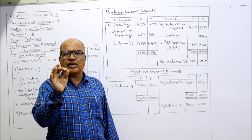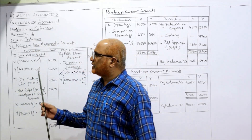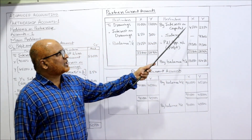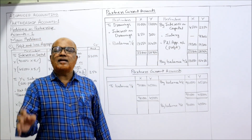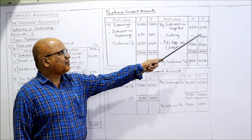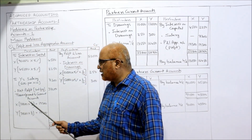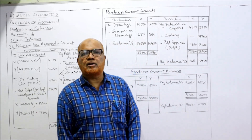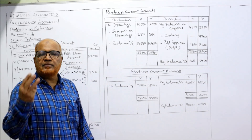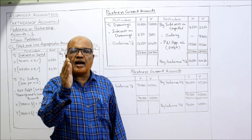These three items always appear on the credit side. First, interest on capital: 4,500 to X and 2,250 to Y. Second, salary — payable only to Y: 7,200; there is no salary to X. Third, share of profit: both partners get 19,300 each from the profit and loss appropriation account. On the debit side, two items appear: drawings and interest on drawings.